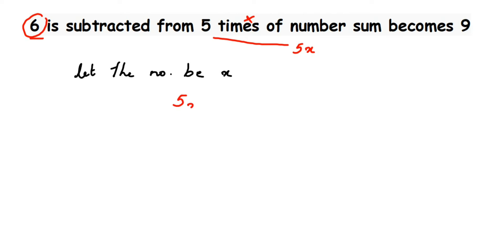Let's read the question. Six is subtracted from five times the number means we're removing six from 5x, so we get 5x - 6. It's not 6 - 5x; you're removing six from 5x. So you subtract six from 5x: 5x - 6.